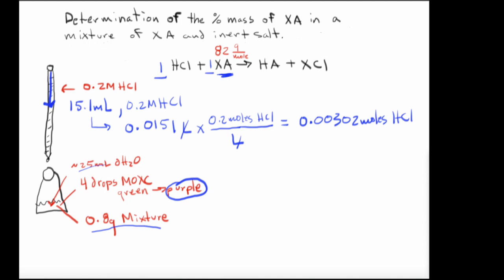Then, and I'm going to change the color again here so it's easier to follow, now we need to use the mole ratio. So we're going to have 0.00302 moles of HCl. And then this is going to be times, there's 1 mole of XA over 1 mole of HCl. So the HCl's cancel out. And that means that in the mixture that we had 0.00302 moles of XA.